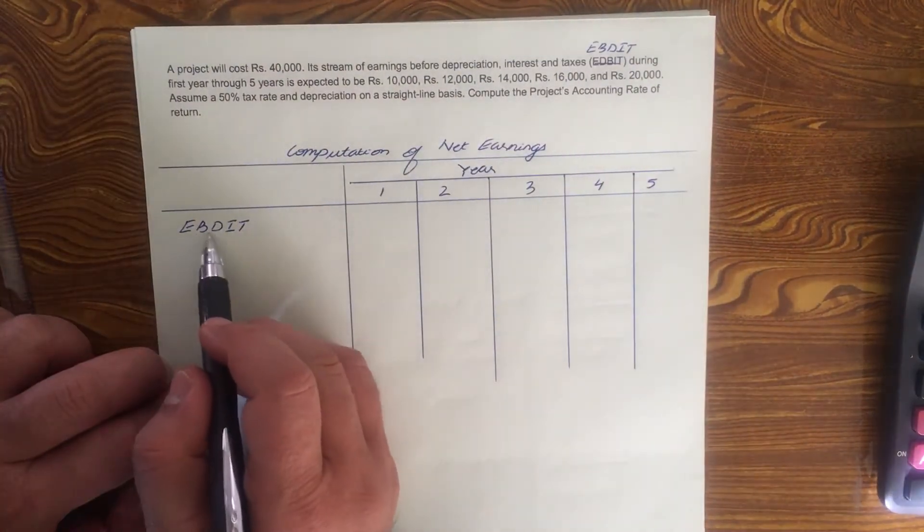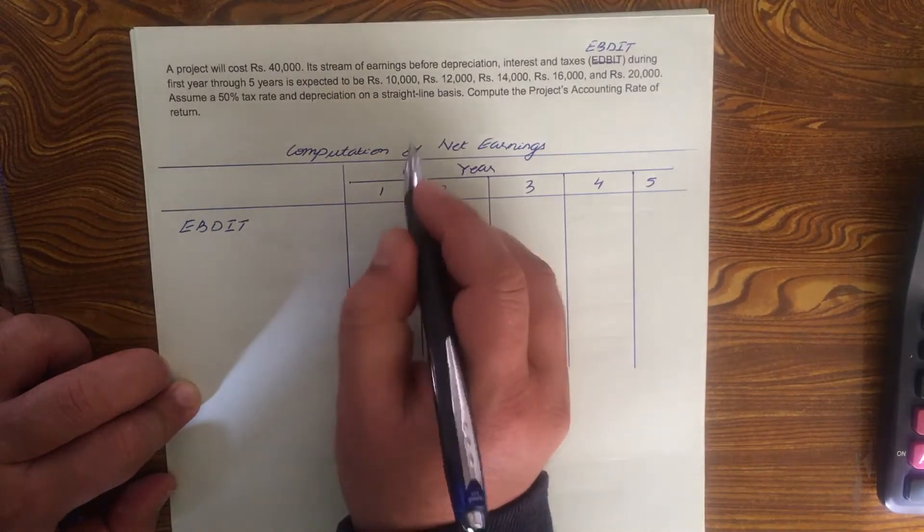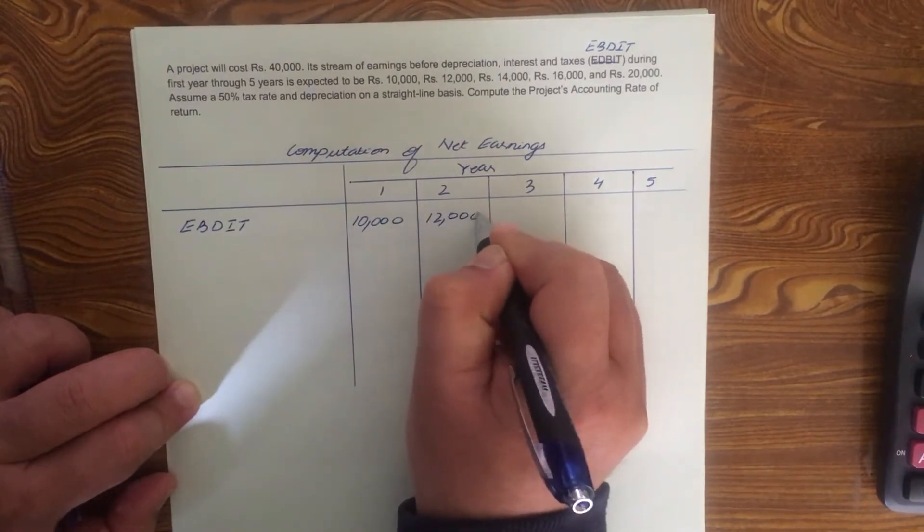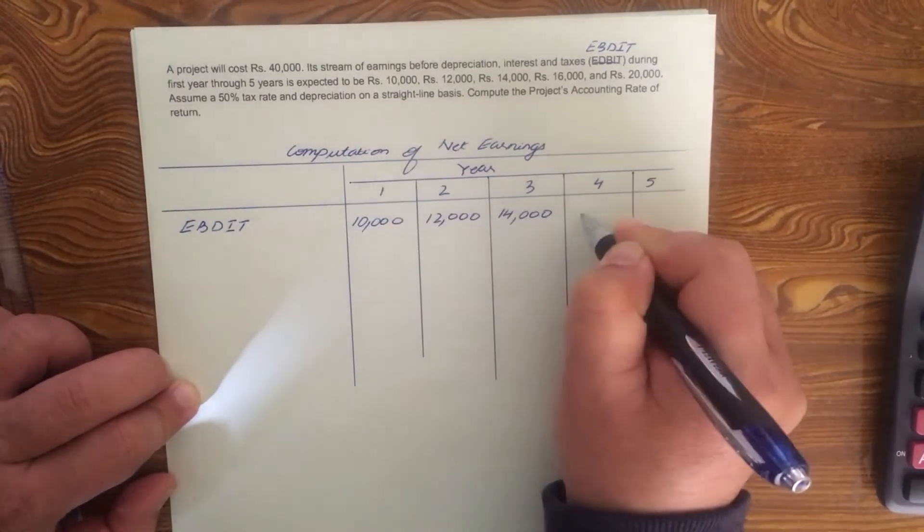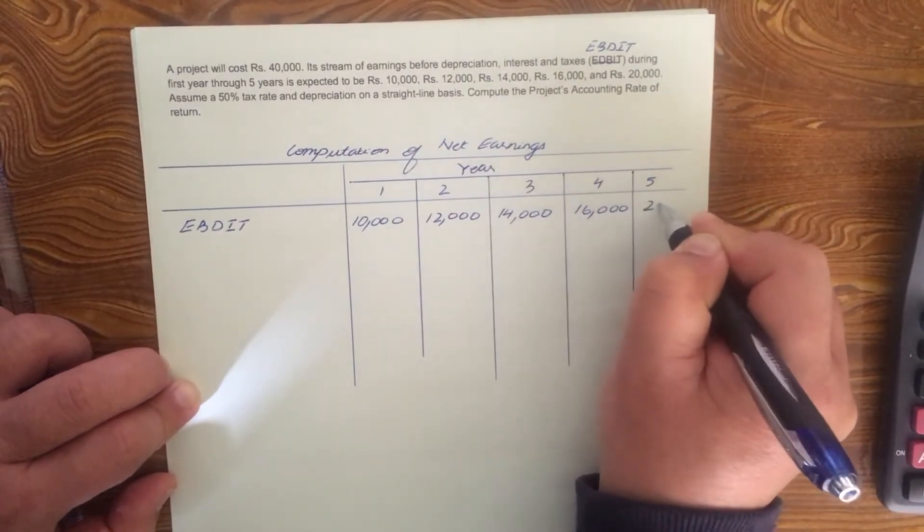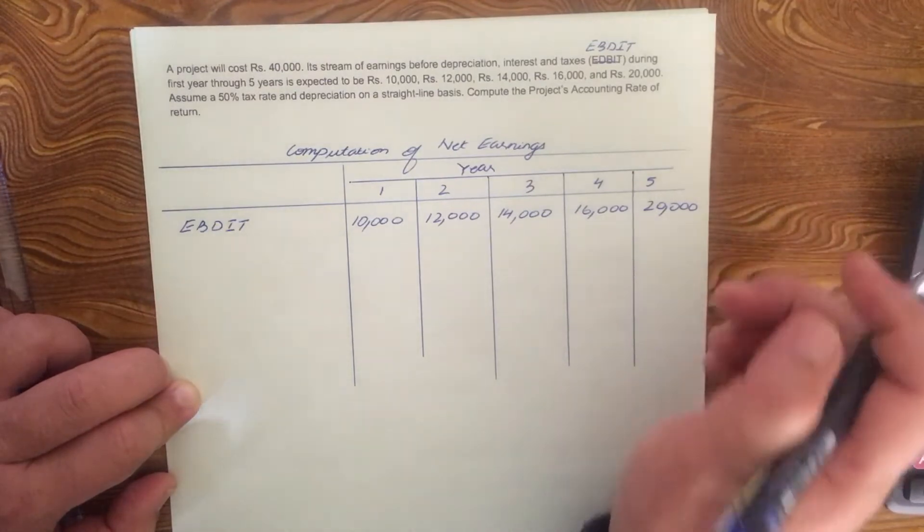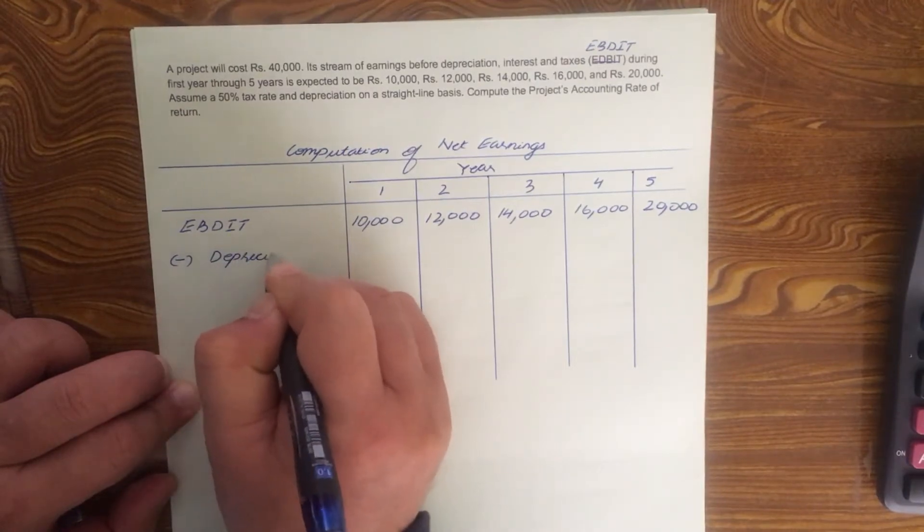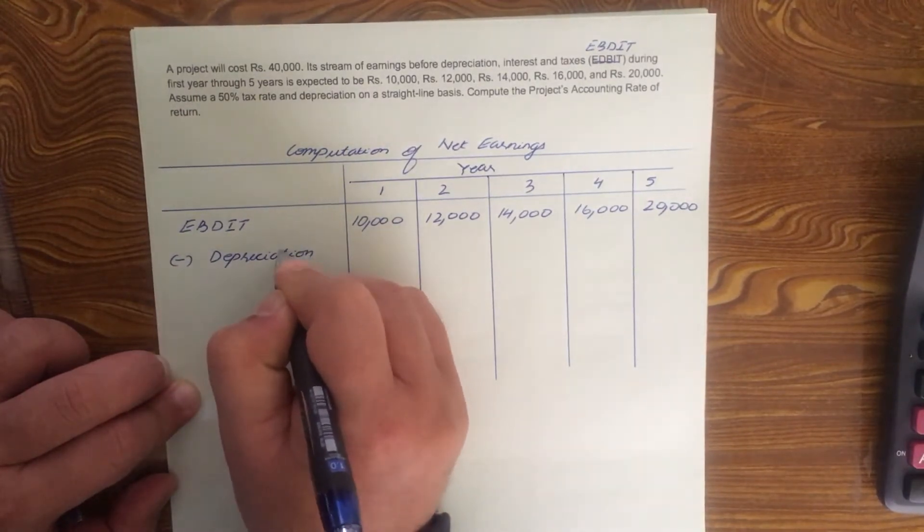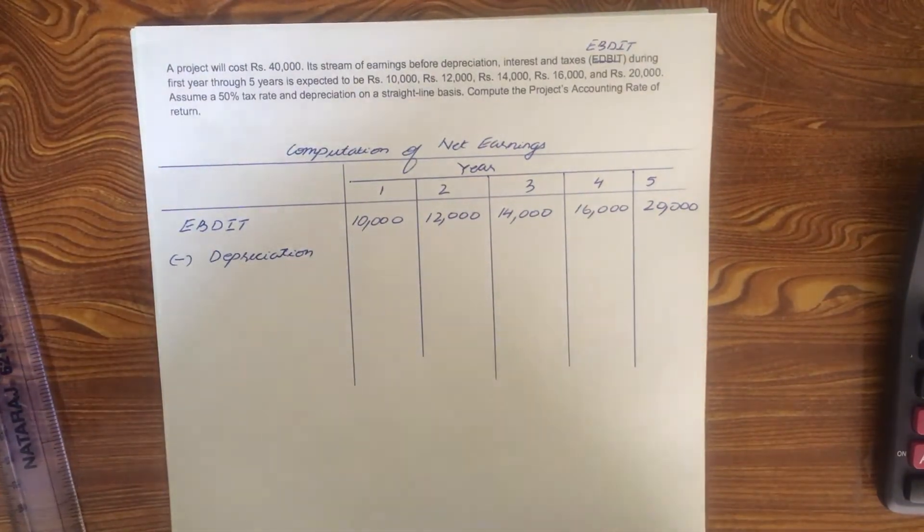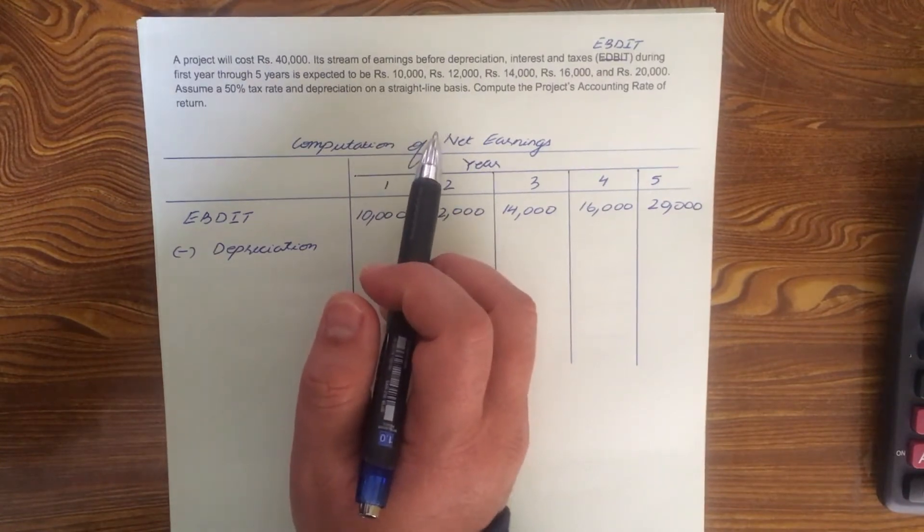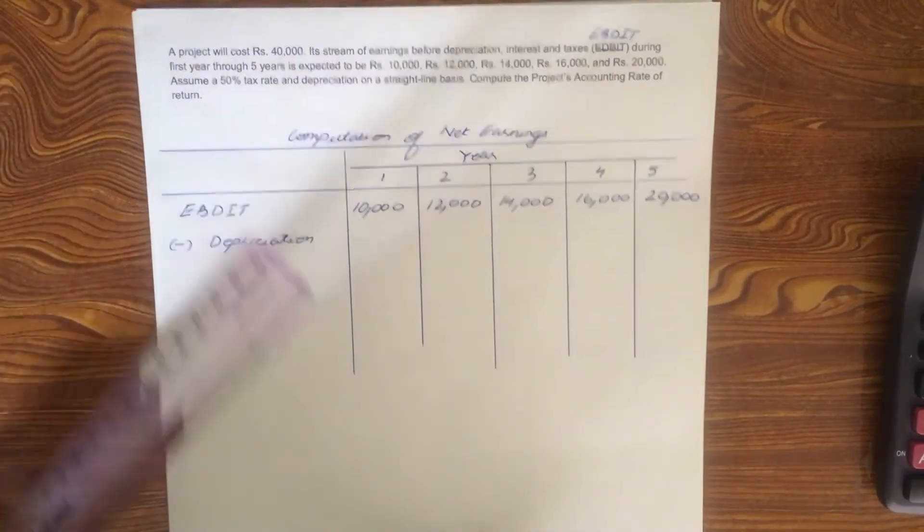10,000, 12,000, 14,000, 16,000, and 20,000 minus depreciation. We are going to calculate depreciation on straight line basis. There are basically two methods for calculating depreciation: one is the straight line method and the other one is the written down value method. Let us calculate depreciation. Working notes.